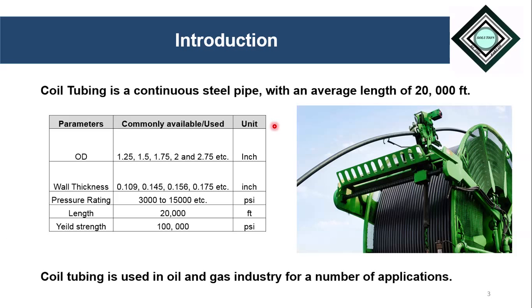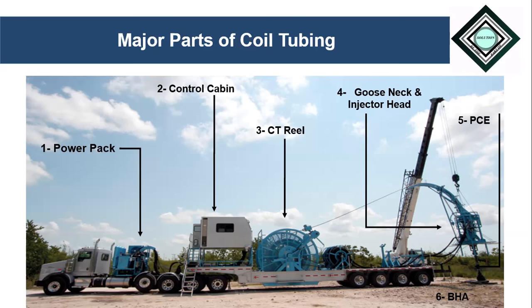Now that you have a clear understanding that coil tubing is a very good technology, a basic understanding about the coil tubing unit will really help you draw your career in the oil industry, especially for new graduates. A typical coil tubing unit has six major parts: number one, power pack; number two, control cabin; number three, coil tubing reel; number four, goose neck and injector head; number five, pressure control equipment; and number six, BHA or bottom hole assembly.